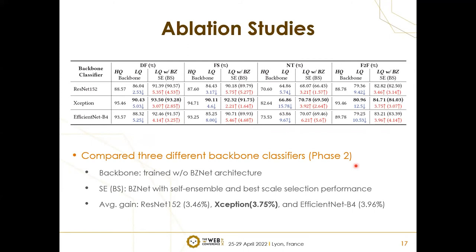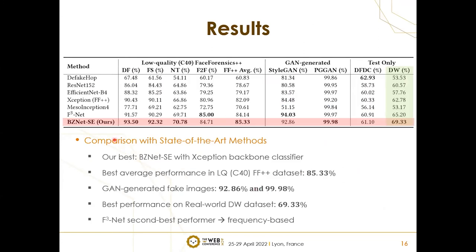We also conducted ablation studies. For our backbone classifier, we tried three different options: ResNet-152, Xception — which FaceForensics++ reported as the best — and EfficientNet, which also showed strong results for deepfake detection. Among the three, Xception performed best, so we selected it to compare with SOTA methods. Comparing single ensemble and best scale selection, single ensemble was better, so we selected it for our final results. The final model is BZNet with single ensemble and Xception as the backbone classifier.